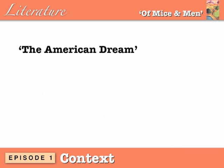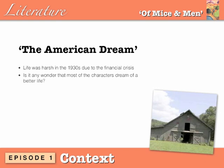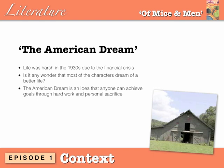One of the things that runs through the novel is the American Dream, and this is related to the context. Life was harsh in the 1930s due to the financial crisis, so it's no wonder most of the characters dream of a better life. The American Dream is the idea that anyone can achieve goals through hard work and personal sacrifice. However, none of the characters in the novel achieve their dreams, and Steinbeck doesn't really offer us a comforting explanation for this truth.